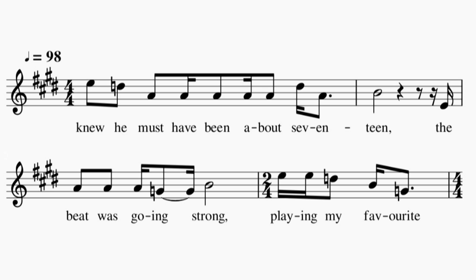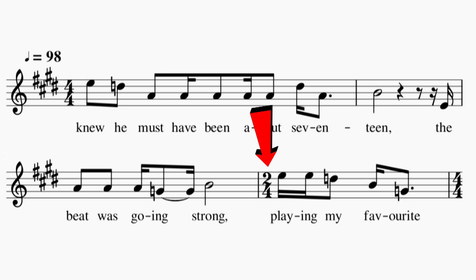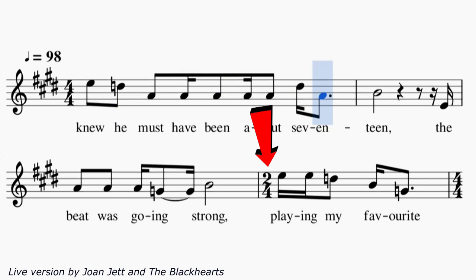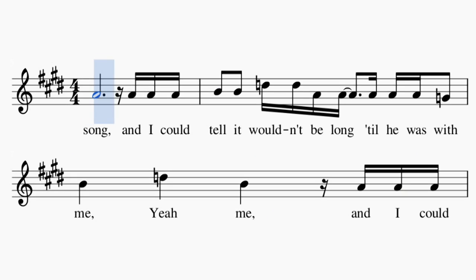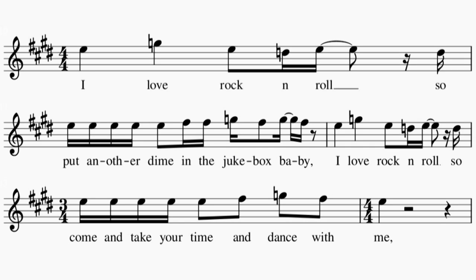Another example of this effect is 'I Love Rock and Roll.' Just like Blondie, 'I Love Rock and Roll' is also largely in 4/4, although we do get some occasional bars of 2/4. But the interesting bit I want to talk about is the sudden change to 3/4 that we get in the chorus hook.